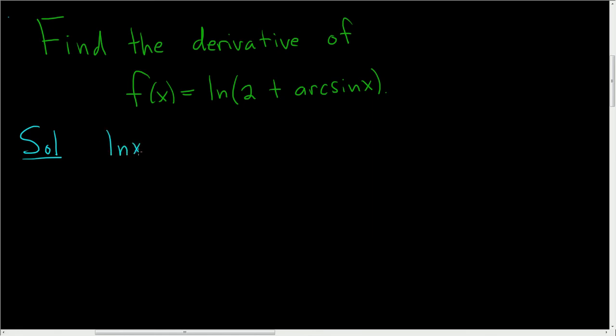If you have the derivative of the natural log of x, that's actually just 1 over x. And if you have the derivative of the arc sine of x, that's just 1 over the square root of 1 minus x squared.